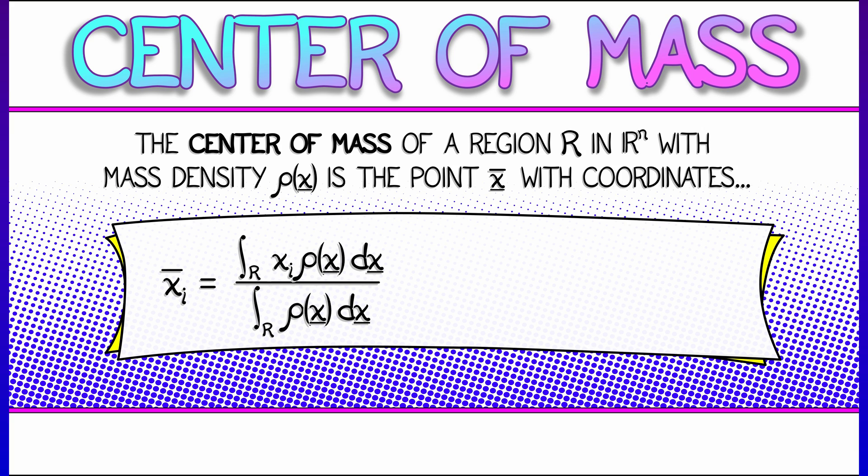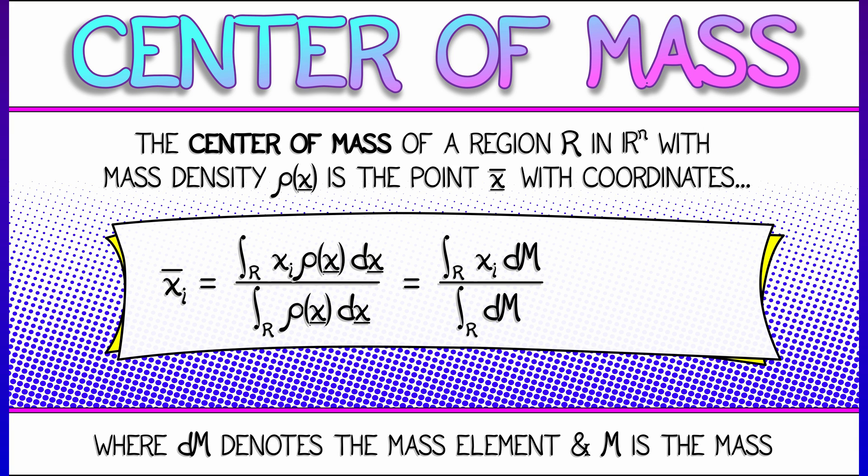If we were to think about this in terms of the mass element dm, where dm is rho of x dx, then this is really just the integral of xi with respect to dm divided by the integral of dm. That is, it's 1 over the mass times the average density-weighted xi value.